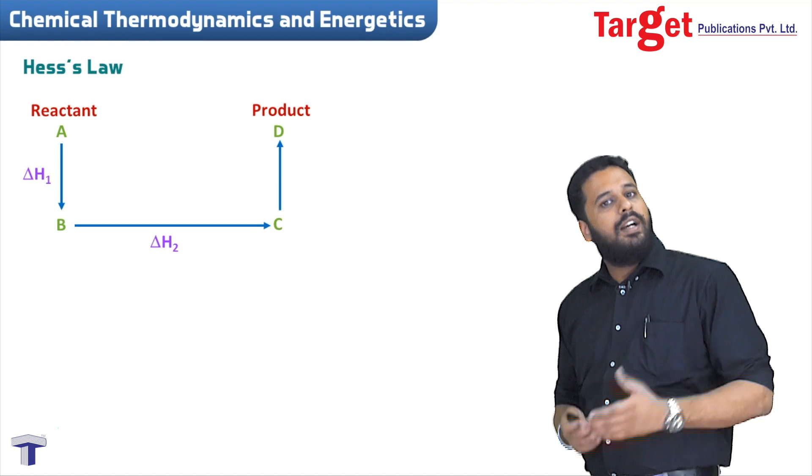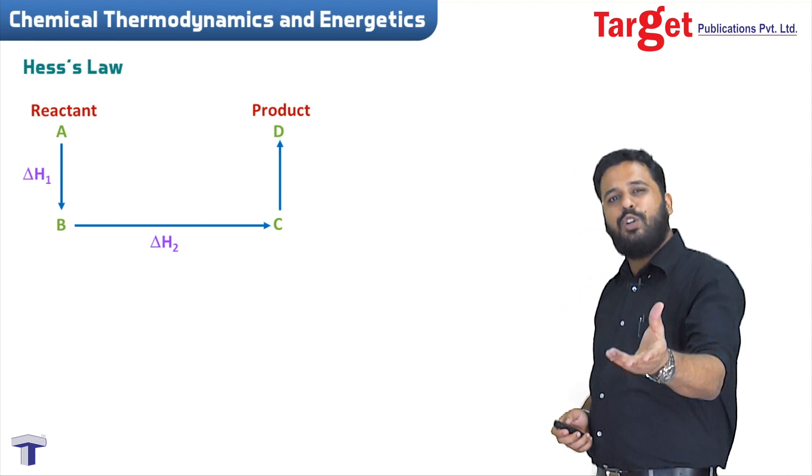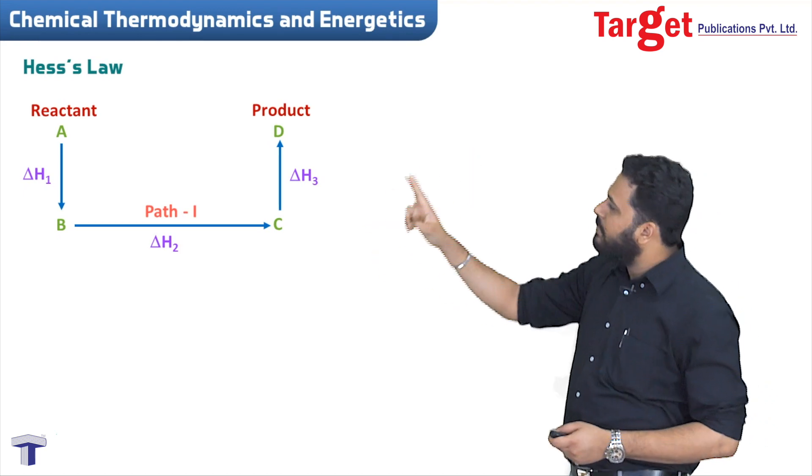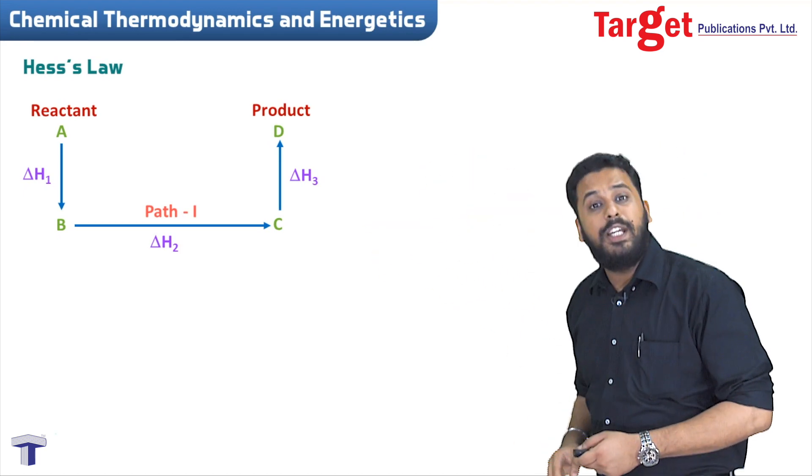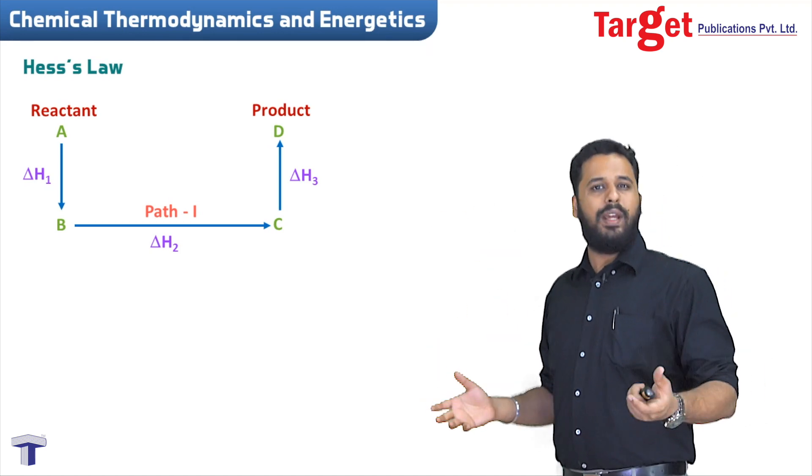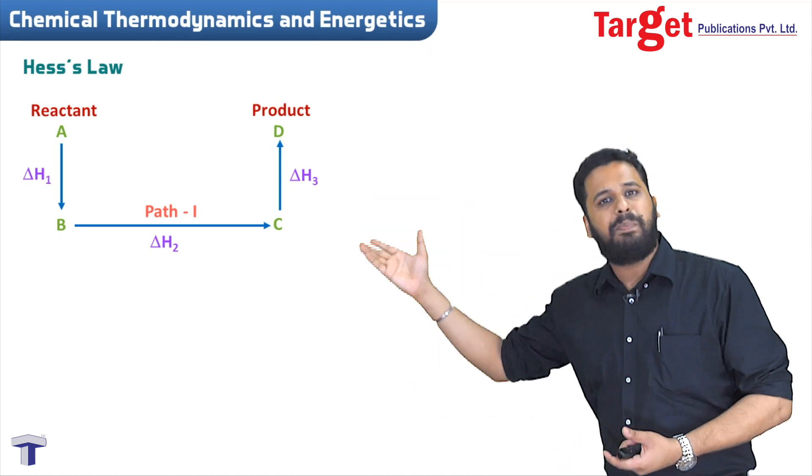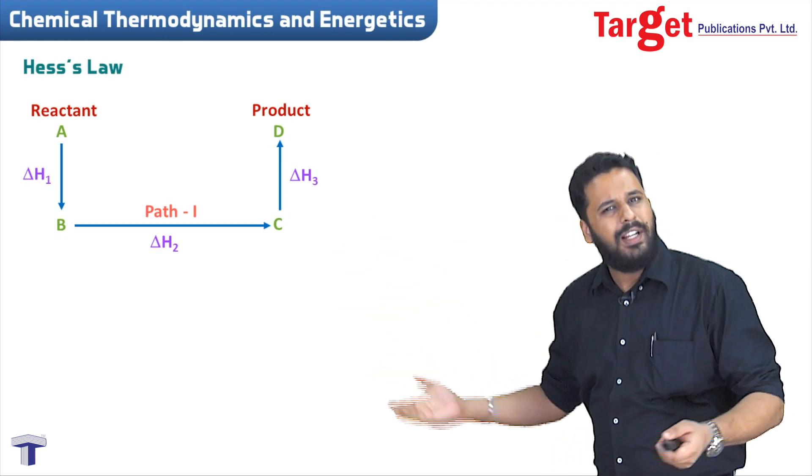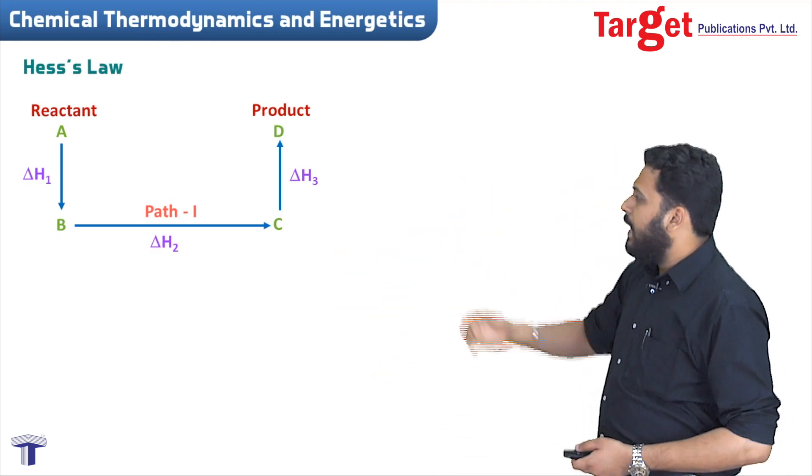Then B getting converted to C - let's call it delta H2. And finally C getting converted to D has its own enthalpy value, let's call it delta H3. So we have seen how A is getting converted to D in three steps, and each step has its own delta H value.